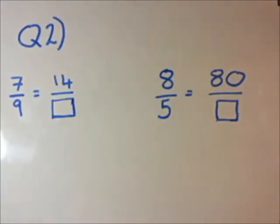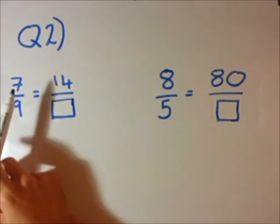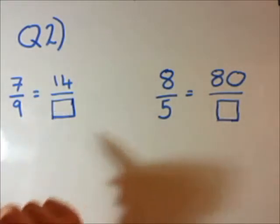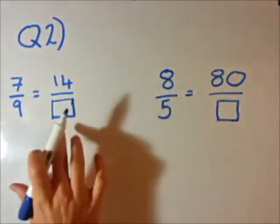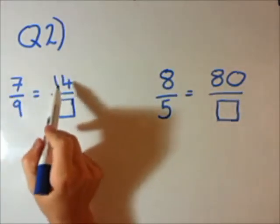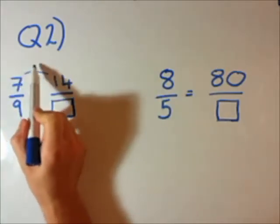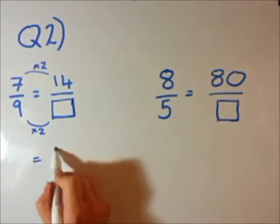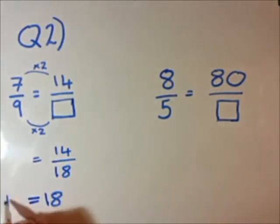Question 2 is a bit more fraction practice. So we've got the fraction on the left and that equals the fraction on the right. Similar to question 1, the trick is whatever you do on the top line — the numerator — you also have to do on the bottom line. So you've gone from 7 over 9 equals 14 over the box. The goal is to work out what's in the box. Well, 7 turned to 14 by timesing by 2. So we've times by 2, and whatever we do on the top we also do on the bottom. So we times 9 by 2. 9 times 2 is 18. So the box equals 18.